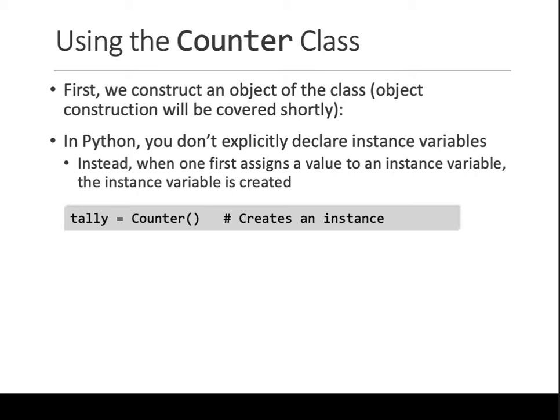Let's say we have created the counter class. As I mentioned before, you call the methods of a class using an object. So the first thing you need to do is create an object. When you create an object in programming languages, that's called creating an instance of a class.